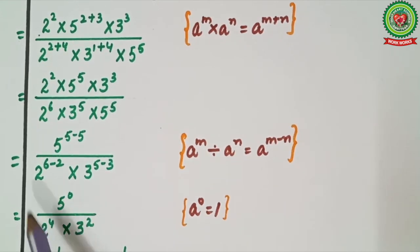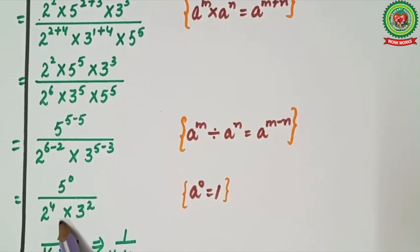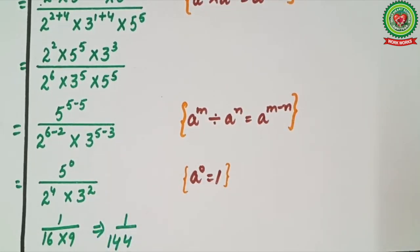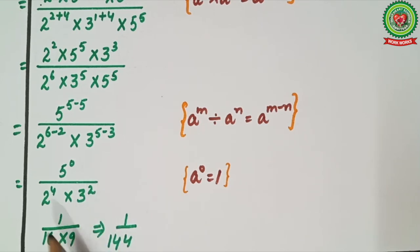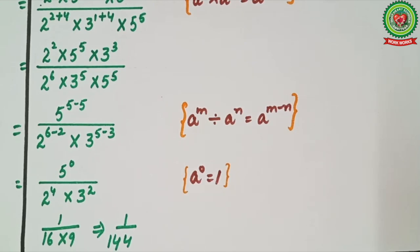Applying the law: any number raised to power 0 equals 1, so 5 raised to power 0 equals 1. Then 2 raised to power 4 equals 16 and 3 raised to power 2 equals 9. The denominator is 16 × 9 equals 144, so the answer is 1 upon 144. Today we discussed how to simplify expressions using different laws of exponents. I hope you are all able to complete the related homework sent via Snap Homework. Thank you.